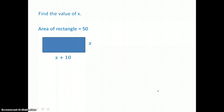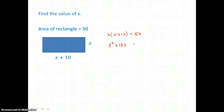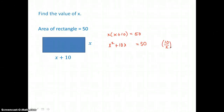Here we want to find the value of x, and we know the area of this rectangle is 50. We write an equation multiplying length times width to get the area of 50. We distribute on the left and get x squared plus 10x. Because we're completing the square, I'll leave 50 on the right-hand side as my c value. My a value is 1, so I take my b value of 10, divide it by 2 and square it, giving 5 squared which is 25. I add 25 to both sides.